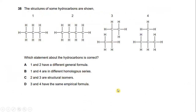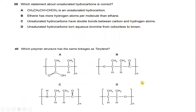The structures of some hydrocarbons are shown. Number one is propane, number two is butane, number three is C4H10 — a type of methylpropane, and number four is also C4H10, which is methylpropane. Which statement about the hydrocarbons is correct? Three and four have the same empirical formula. So the answer is D.